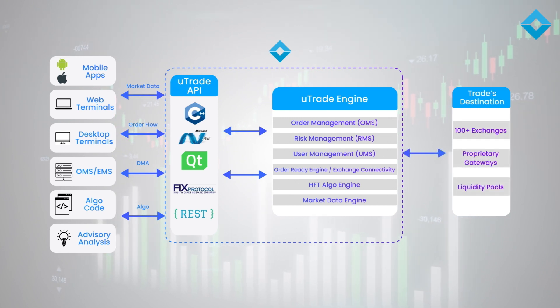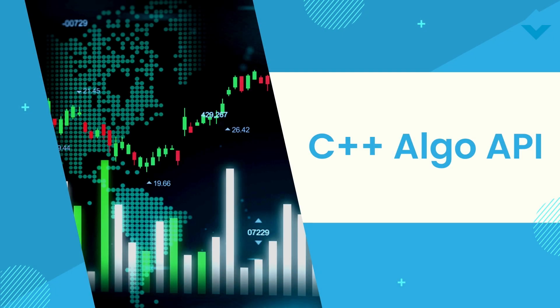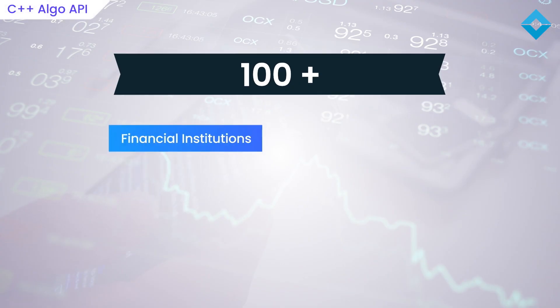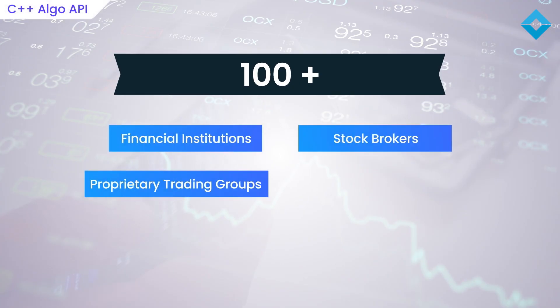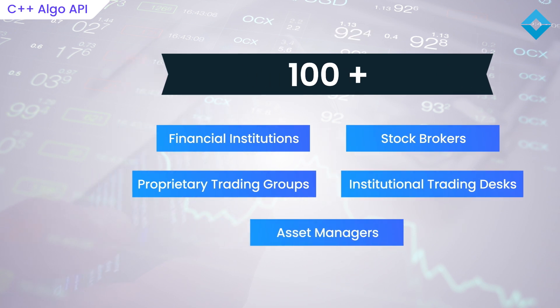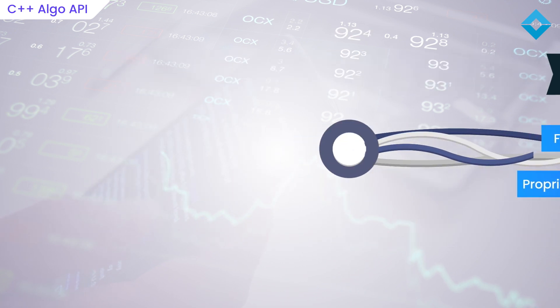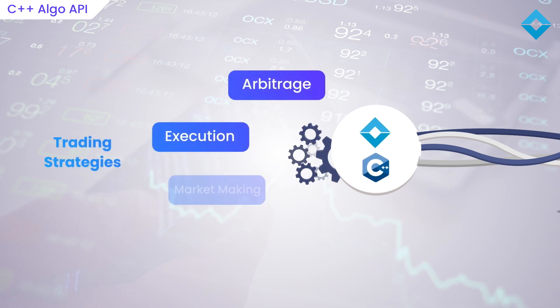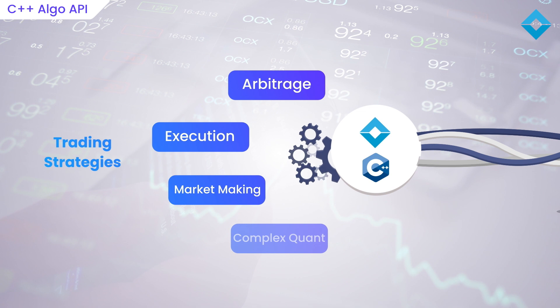It's as simple as plug and play. Hundreds of financial institutions, stockbrokers, proprietary trading groups, institutional trading desks and asset managers use UTrade's C++-based algo API for developing mission-critical strategies for arbitrage, execution, market-making and complex quant-based trading strategies.